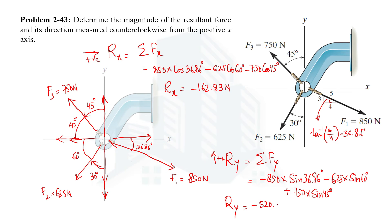Summing those values, we get the y component of the resultant force as −520.94 N. Both the x and y components are negative, which tells us the resultant force lies in the third quadrant — the quadrant where both x and y components are negative.